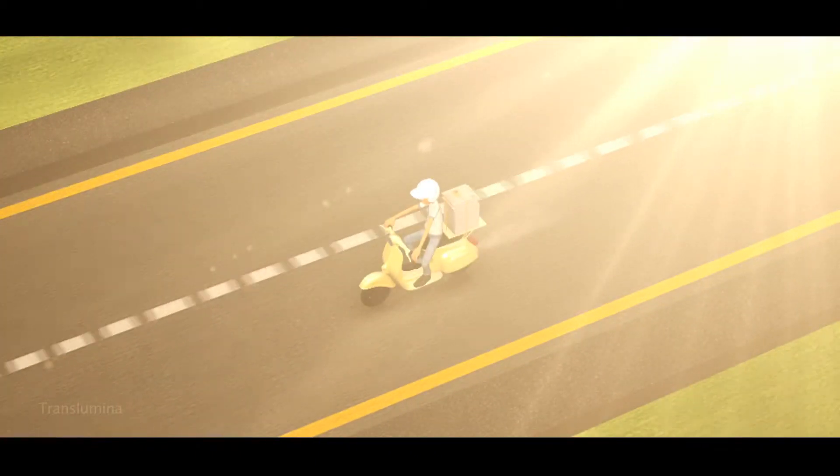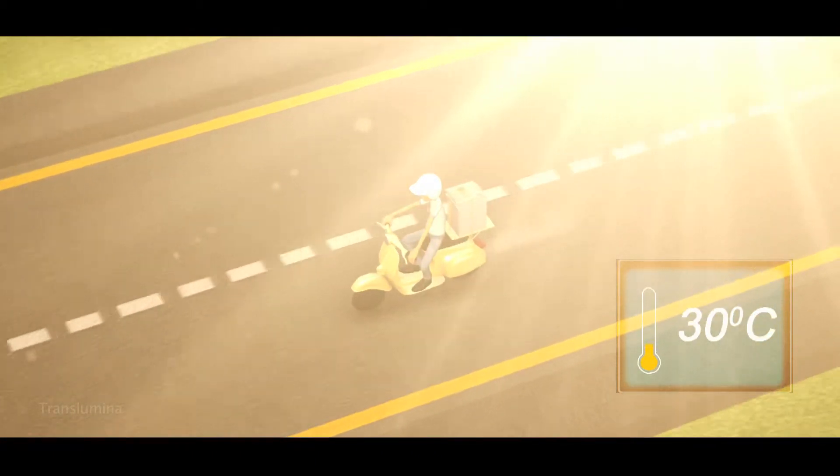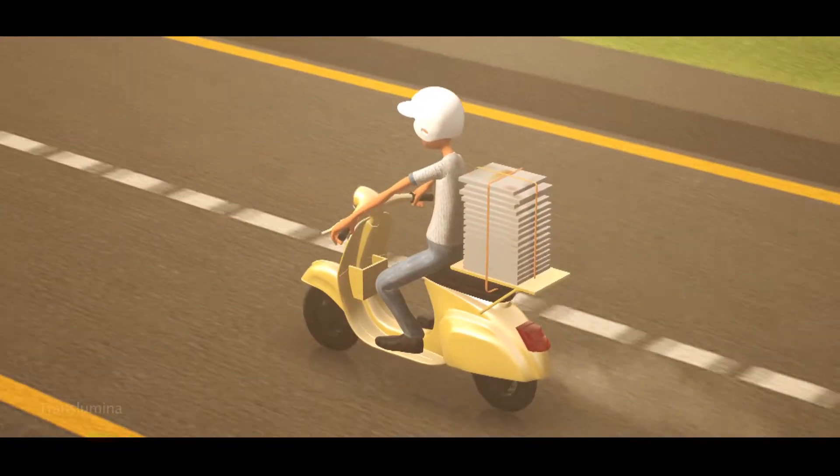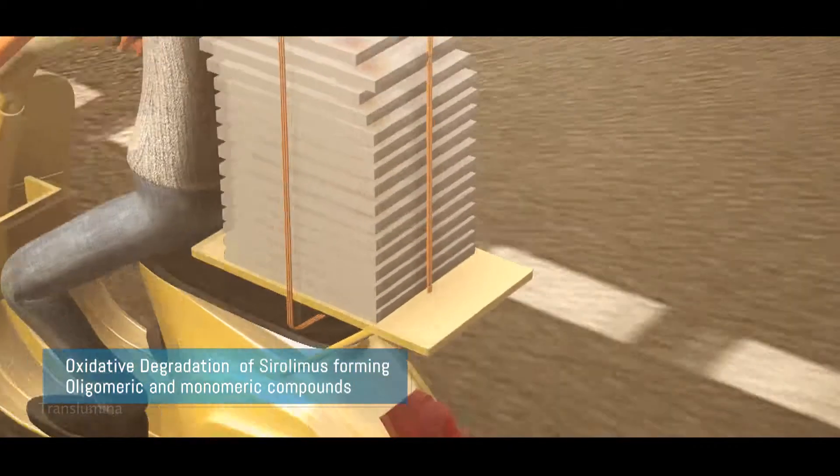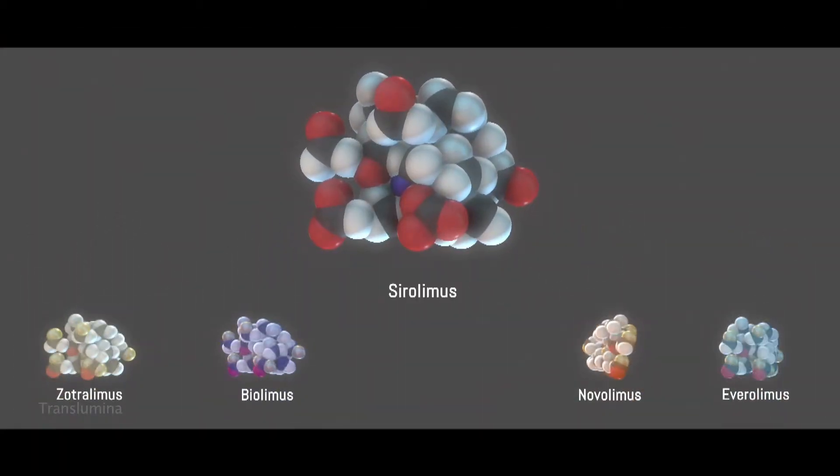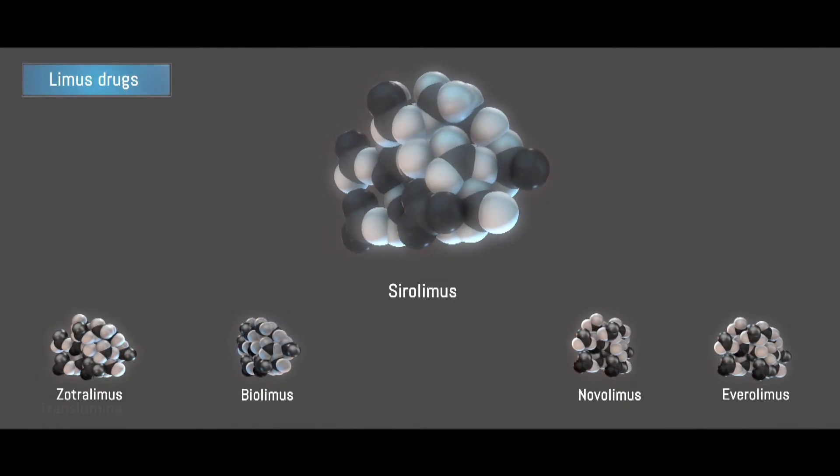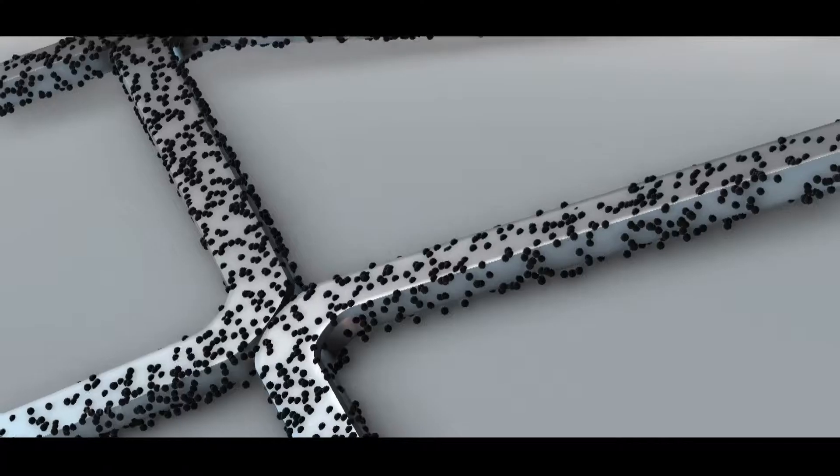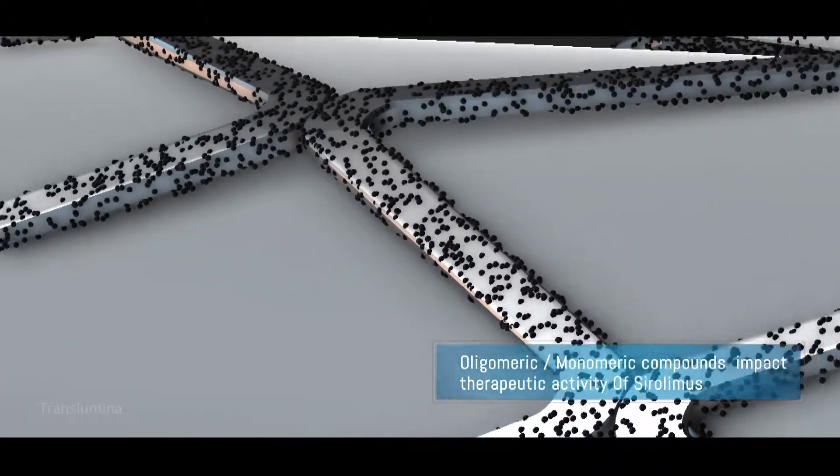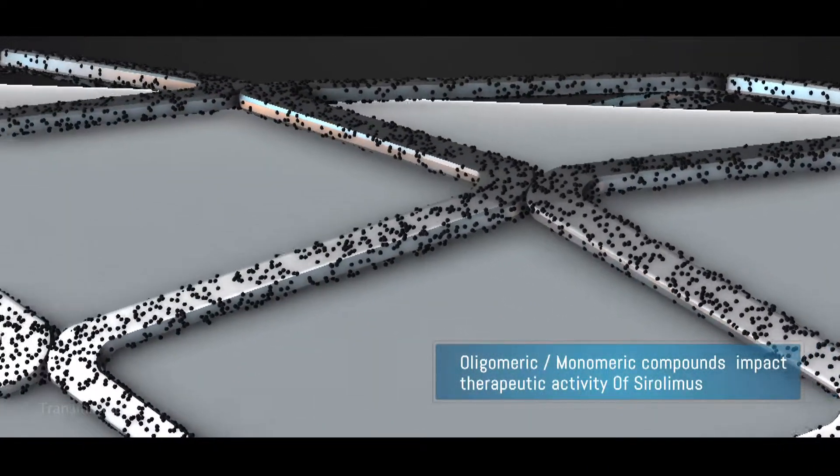On exposure to temperatures above 30 degrees Celsius, the drug eluting stent undergoes oxidative degradation and auto-oxidation that results in formation of a complex mixture of monomeric and oligomeric compounds. These monomeric and oligomeric compounds impact the therapeutic activity of sirolimus.